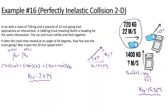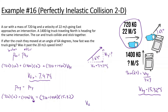Now looking at momentum initial in the Y versus momentum final in the Y: the car (720 kg) is only going to the right, so its Y velocity is zero. The truck (1400 kg) has an unknown Y velocity. After the crash, they move together at 15.32 meters per second in Y. So: (720 + 1400) times 15.32 divided by 1400 gives us 23.2 meters per second — the truck was over the speed limit.